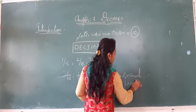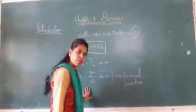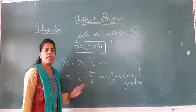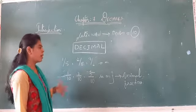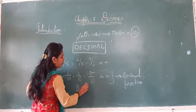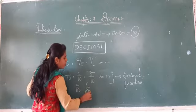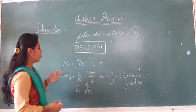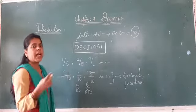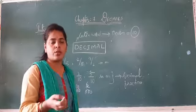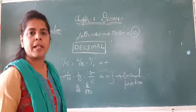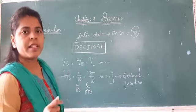Decimal fractions are written in fraction form where the denominators are multiples of 10 — like 1 by 10, 3 by 10, or even 4 by 100 or 6 by 1000. These also have their own place value system. We will see how to write them in the place value system, just like we use units, tens, hundreds in the Indian number system.